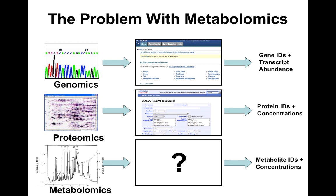Tools like BLAST and NBLAST-X allowed you to take sequence or protein data, upload it to the web, and instantly get gene identifiers, transcript abundance, protein identifiers, and even concentrations. But even as recently as 15 years ago, with metabolomics, you'd have your GC, LC-MS, or NMR spectrum and there was nothing to upload to — no database, no BLAST, no Mascot, nothing that would give you metabolite IDs and concentrations.